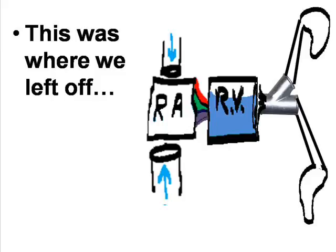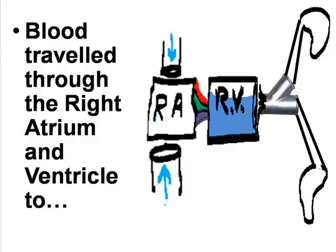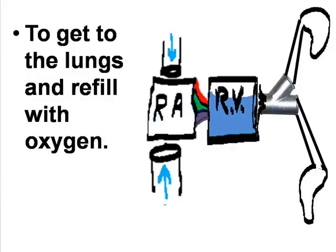This was where we left off. Blood traveled through the right atrium and ventricle to get to the lungs and refill with oxygen.